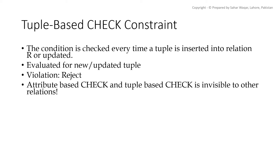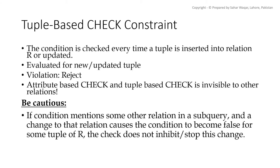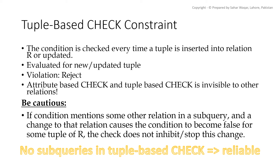Just as an attribute is checked for attribute level constraints, a tuple-based CHECK constraint is checked for a new or updated tuple — any change that causes a violation will be rejected. It is written as part of a table definition and interpreted as a tuple level constraint. Attribute names of the relation can be used inside, and subqueries can also be written inside. However, the same issue applies: if there is a change to another relation referenced in a subquery that causes a constraint violation, this will not be detected, because these constraints are only checked when a tuple of the same relation changes. Even deletion of a tuple from the relation itself can make the constraint false. Therefore, it is better to avoid subqueries in attribute or tuple-based CHECK constraints.